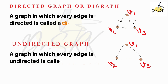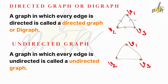What is a directed graph or digraph? A graph in which every edge is directed is called a directed graph or digraph. Looking at the first diagram, every edge — connecting V1 to V2, V2 to V3, and V3 to V1 — is directed by means of arrow marks.